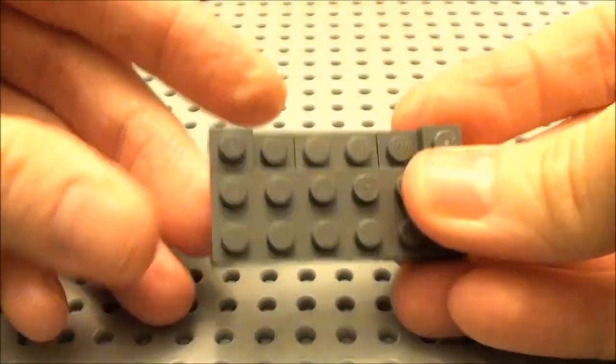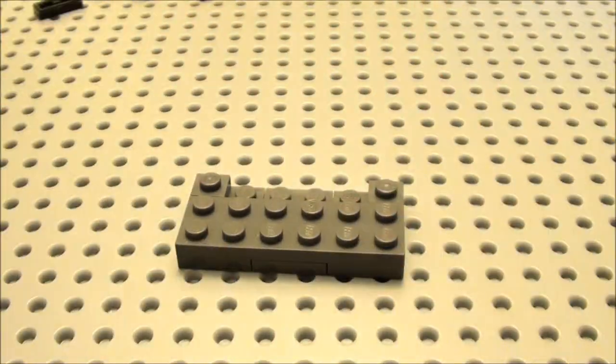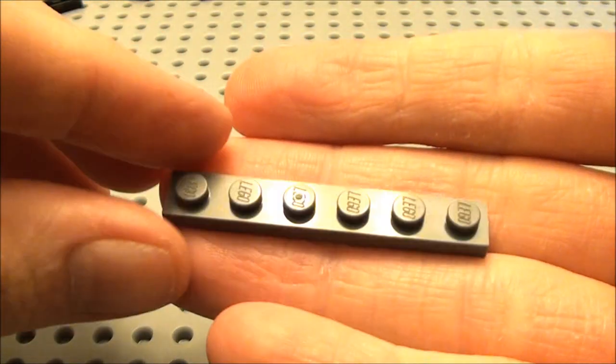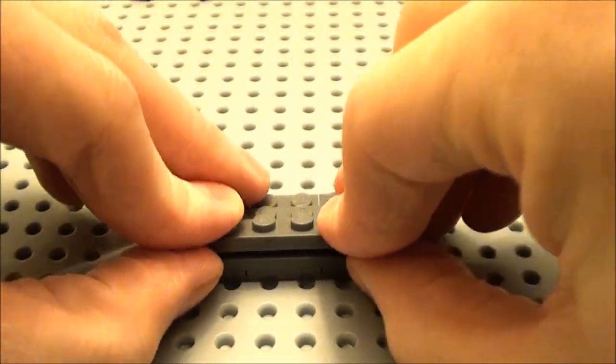Start forming the sides of our grill. Next we're going to take a 1 by 6 plate. Place it here at the front. This will be the front of our grill.